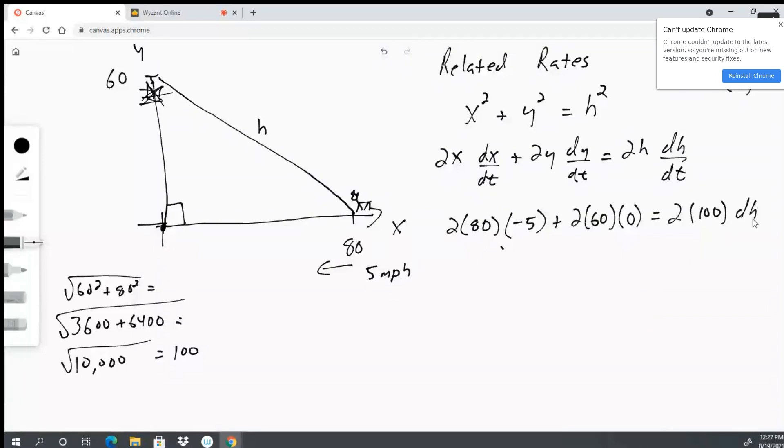And dh/dt, or the change in the hypotenuse, or how far the dog is from the top of the tree, is what we're trying to solve for. So what this comes out to being is -800 + 0 = 200(dh/dt). We divide both sides by 200, we get -4 = dh/dt.